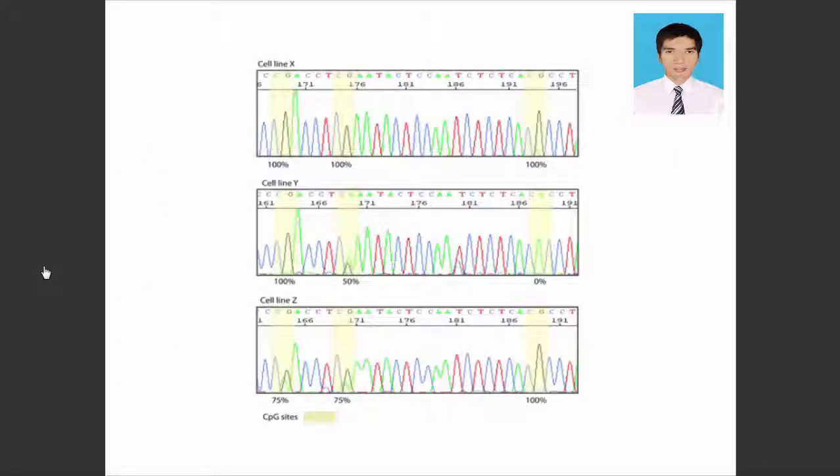The resulting PCR fragments from amplification of bisulfite-treated samples can be visualized by agarose gel electrophoresis and sequenced directly. Shown here is a sequence trace from three different cell lines with CpG sites highlighted in yellow.